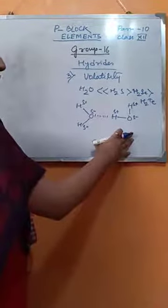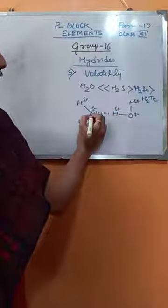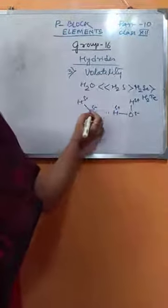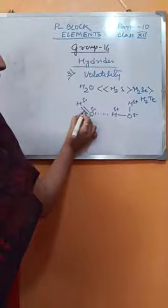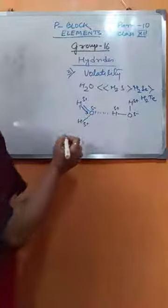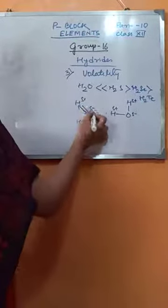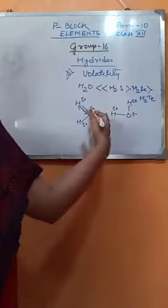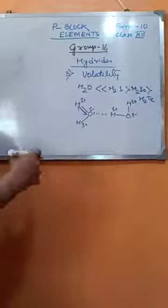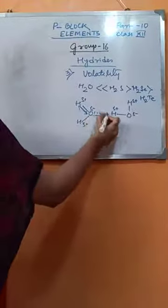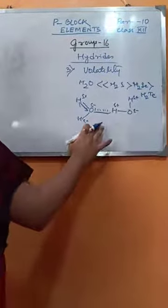Intermolecular hydrogen bonding takes place in water because of the polarity of the H–O bonds. Oxygen is highly electronegative, so there is a huge electronegativity difference between hydrogen and oxygen, making the H–O bond highly polar with good charge separation. As a result, intermolecular hydrogen bonding is present in water only, and to break this association, a huge amount of heat is required. So the volatility of water is the least.